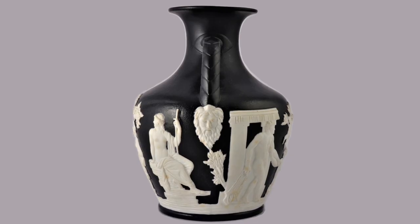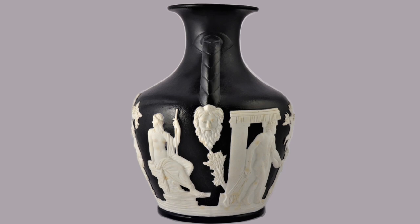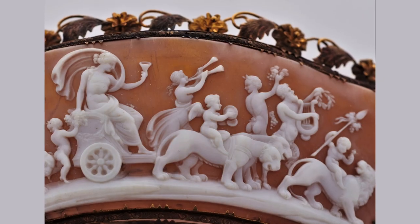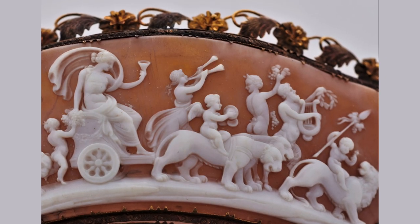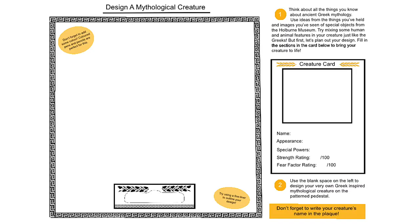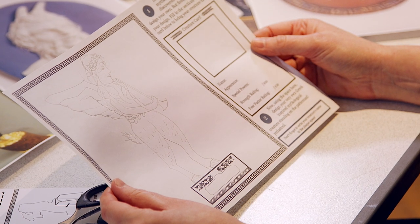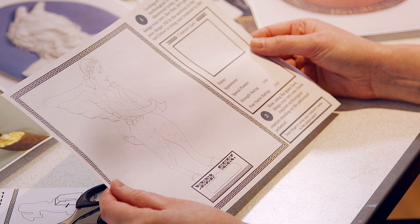Now for a creative activity. We're going to use all the ideas from Greek and Roman mythology and objects from the Holborn Museum's collection to create your own mythological creature. To get us going, we're going to use this activity sheet and you are going to make a top trump card for your imaginary creature.